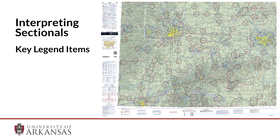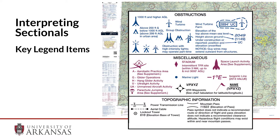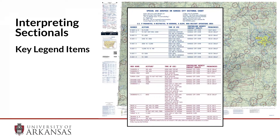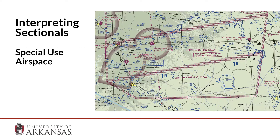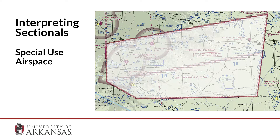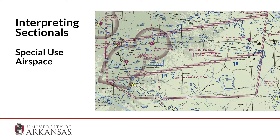Pay particular attention to the symbols for different types of obstructions. The legend also shows the operating hours of special-use airspace, which may have fast-moving military aircraft — some of those go as low as 100 feet above the ground. Here's an example of special-use airspace and the associated schedule. Using this tool, you can plan effective missions in airspace that appears otherwise unusable.